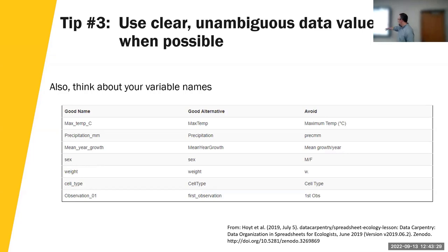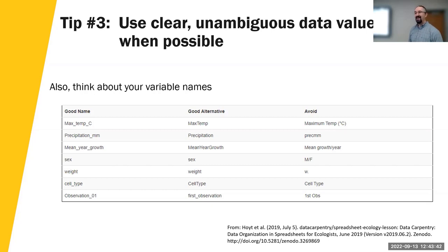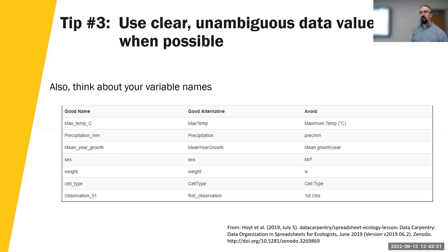Another example: using 'm/f' versus using 'sex' as the column name. Contextually with the label 'm/f' we kind of know what they're talking about, but you're also using a slash sign, which is problematic for some systems. Think more broadly about what category of data this is and come up with a name that works for it. Using simple alphanumeric characters works really, really well.